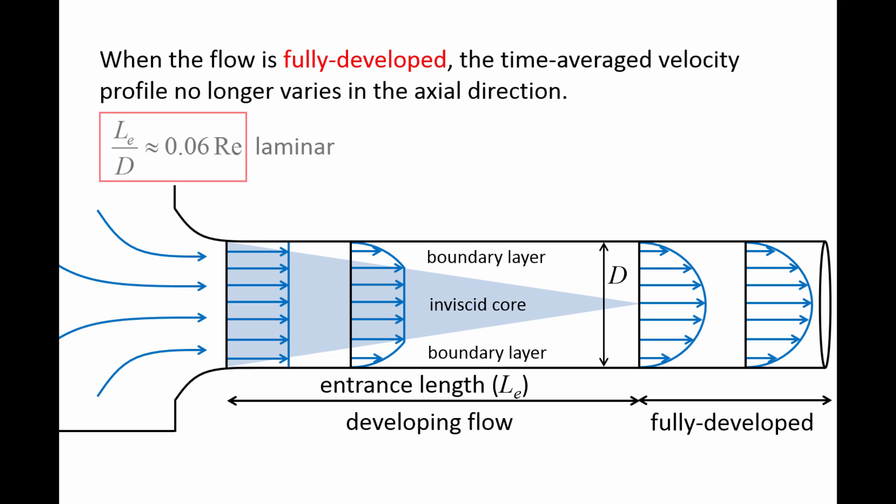For laminar flows, where the Reynolds number is less than 2300, one formula for calculating the entrance length in circular pipes is Le over D approximately equal to 0.06 times the Reynolds number.